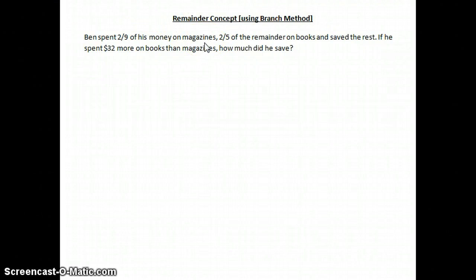How do we know that this question is involving the remainder concept? Very easy. In this question, it says that Ben spent two-ninth of his money on magazines, two-fifth of the remainder on books, and save the rest. The word remainder gives us a clue that this is a remainder concept. This tells us that this is a remainder concept.